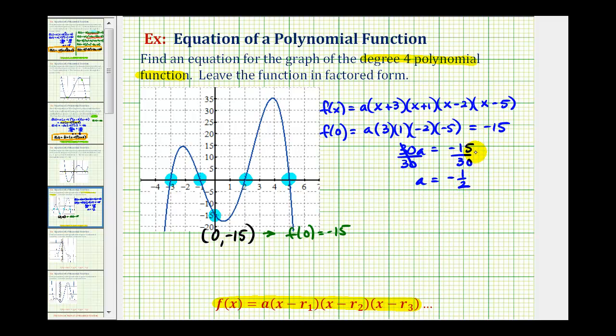Now we have all the information we need to write our polynomial function in factored form. Using this form of our function, we'll substitute negative one-half for a.